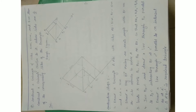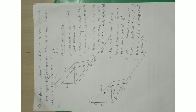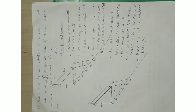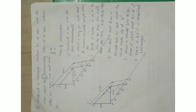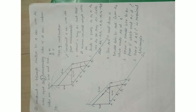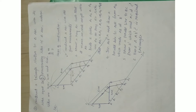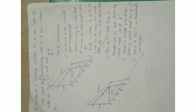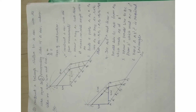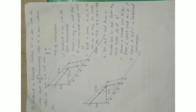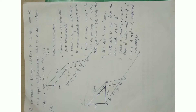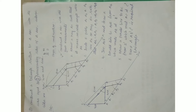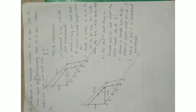Another important 8-mark question: construct a triangle similar to triangle ABC with its sides equal to 4/3 of the corresponding sides of triangle ABC, whose sides are 4 cm, 4 cm, and 6 cm. Watch the video properly and write the steps of construction.